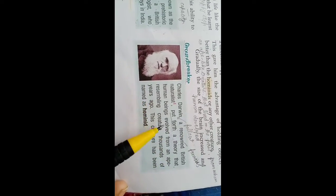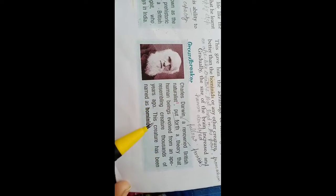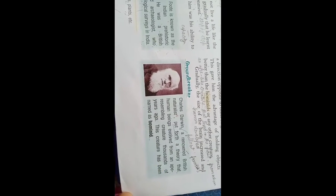The next groundbreaker is Charles Darwin — a renowned, meaning famous, British naturalist. Naturalist means one who studies animals and plants. He put forth a theory that human beings evolved from an ape-resembling creature thousands of years ago. This creature has been named as human. Charles Darwin gave this theory that in early years, the ape-like creature gradually became a human being.